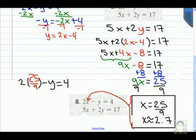So 25 over 9 replaces the x, then we multiply and get 50 over 9 minus y equals 4.